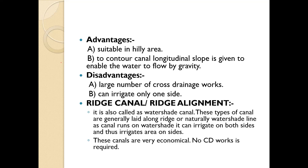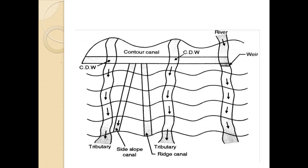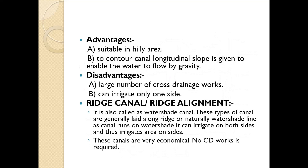Advantages of contour canal: It is suitable in hilly areas, and a longitudinal slope is given to enable water flow by gravity, allowing better flow. Disadvantages: A large number of cross drainage works are needed. Water tends to flow by gravity perpendicular to the contour lines, but the canal runs along the contour, so there are always cross drains in between. Also, it can irrigate only one side.